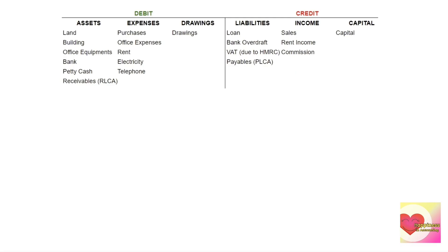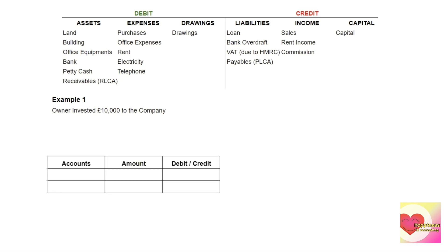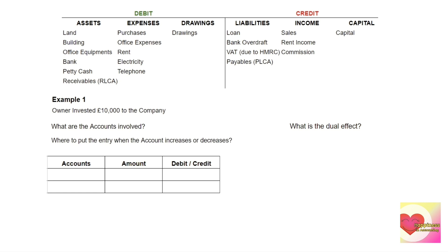Let's look at some example transactions. Example one: the owner invested 10,000 to the company. To find the correct entry, we answer three questions: What are the accounts involved? What is the dual effect? And where does the entry go when the account increases or decreases? Using DEAD CLIC — the accounts involved are bank and capital.